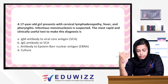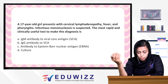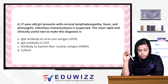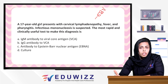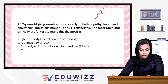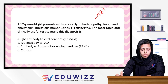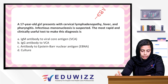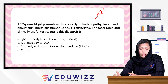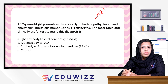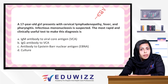Next question: A 17-year-old girl presents with cervical lymphadenopathy, fever, and pharyngitis. Infectious mononucleosis is suspected. The most rapid and clinically useful test for diagnosis — we suspect an EBV infection. The options are: IgM antibody to Viral Capsid Antigen (VCA), IgG antibodies to VCA, antibody to Epstein-Barr Virus Nuclear Antigen (EBNA), and Culture. What are the first antibodies in an acute infection?